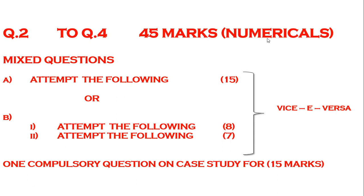Questions 2 to 4 come for 45 marks of numericals. It will be a mixed question — question 2A will be 'attempt the following,' with one case study coming for 15 marks. Question 2B will be divided into two parts: 8 marks and 7 marks. Always remember, questions 2 to 4 will be designed as mixed questions — there is no fixed allocation that question 2 comes from unit 2 or question 3 from unit 3. Questions will be mixed from units 1, 2, 3, 4 onwards, with one fixed case study question for 15 marks.